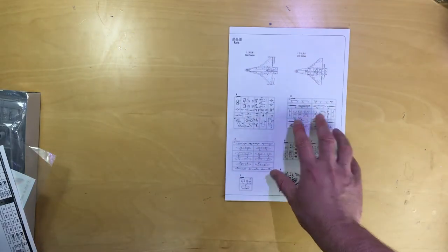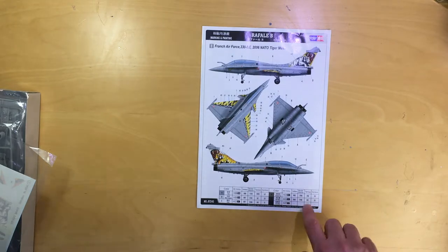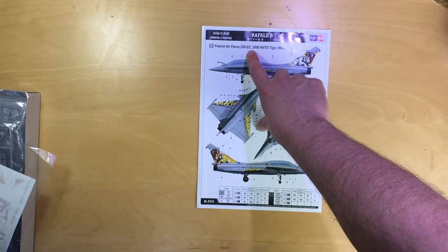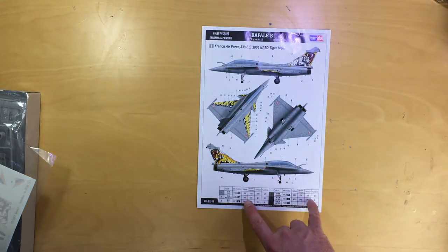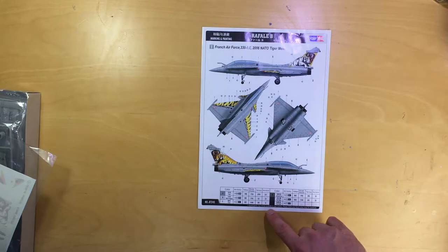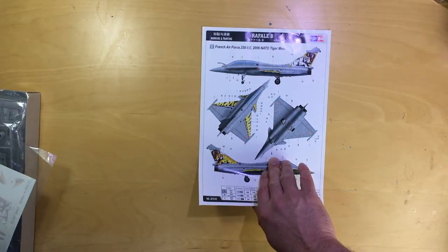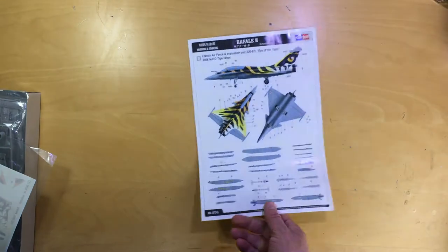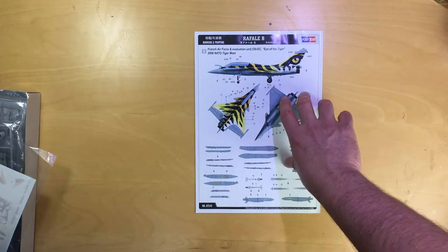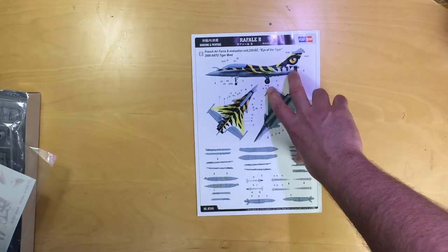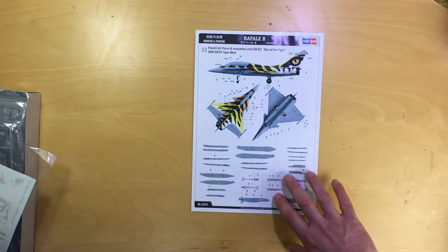On the back is just a sprue map. For the marking schemes, the first scheme is from the French Air Force, the serial number of the aircraft at the 2006 NATO Tiger Meet. Callouts are given in Mr. Hobby, Vallejo, Model Master, Tamiya and Humbrol - that's quite nice, good various options for the paints. The second one is another Tiger Meet 2006 with a stunning Eye of Tiger scheme, and it's also got all of the appropriate weapons.